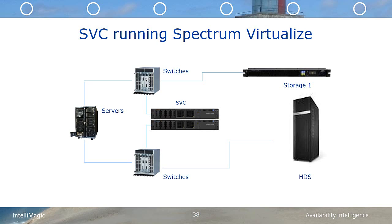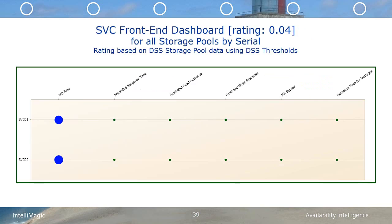Each row in the dashboard represents a different system running Spectrum Virtualized, and the columns along the top show the different risk indicators. The rating is just a way of measuring the intensity of the risk, with zero being no risk and three indicating significant risk. By hovering over each bubble, you can actually see the ratings and tooltips for each of the metrics. The SVC front-end dashboard shows that all is well.